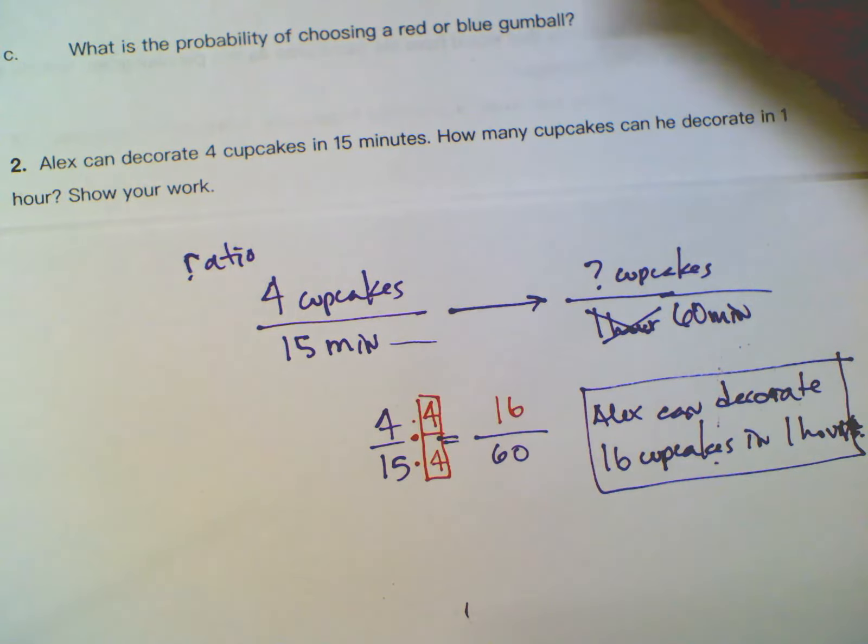And the math is shown by setting up a ratio equal to another ratio with the right units, cupcakes on top, minutes on the bottom. Setting up a proportion to solve for the missing piece using the giant one, because 15 times 4 is 60, therefore I can multiply by 4 over 4 to figure out what the numerator is.